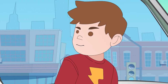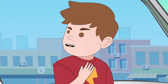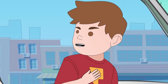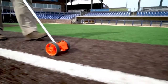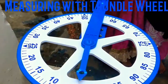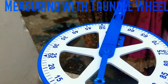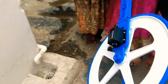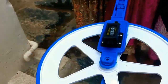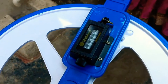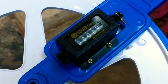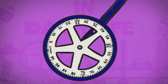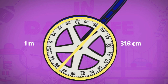But how is this concept used in a real-time scenario? A device called a trundle wheel is used to measure long distances. A marking is placed on this wheel so that it clicks for one complete revolution. It has a diameter of 31.8 cm, because then its circumference will be exactly 1 meter using the above formula.